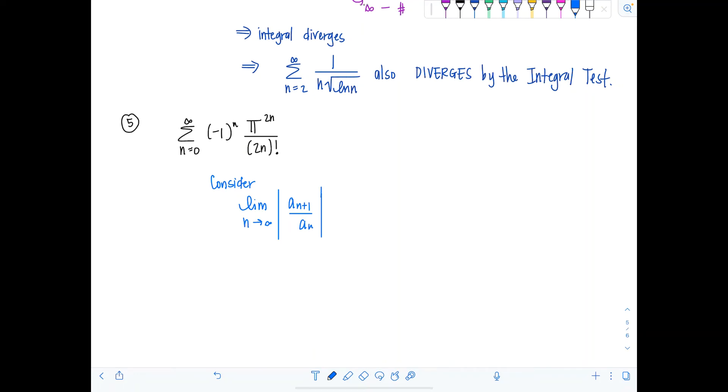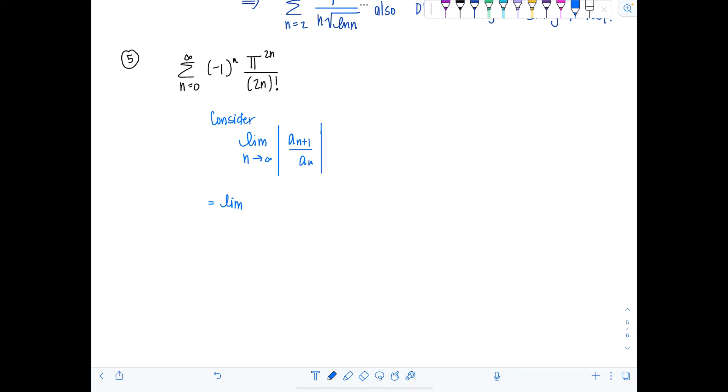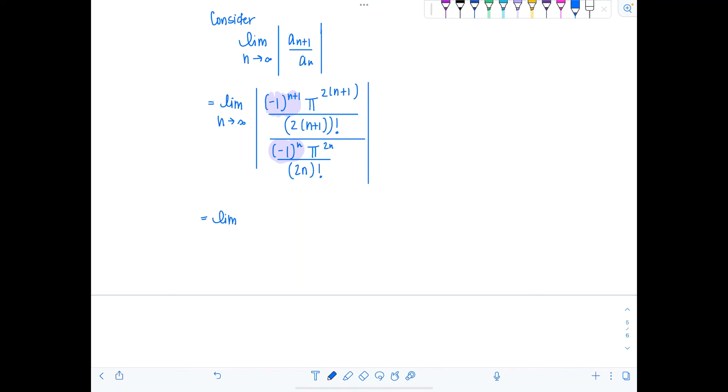Limit as n goes to infinity. We have absolute value of a_n plus 1 over a_n. So let's see here. I'm going to have limit n goes to infinity. Absolute value of a_n, n plus 1 is going to be negative 1 to the n plus 1 pi to the 2 times n plus 1 over 2 times n plus 1 and then factorial. Do you see how I'm putting the n plus 1 in parentheses? That is crucial. Over negative 1 to the n pi to the 2n over 2n factorial. Now let's clean it up. We're taking absolute value of all of this. So the negative 1 raised to whatever just goes away because when you take absolute value, those are going to become positive 1 if they aren't already. So just dump them. You can ignore them. They are gone.